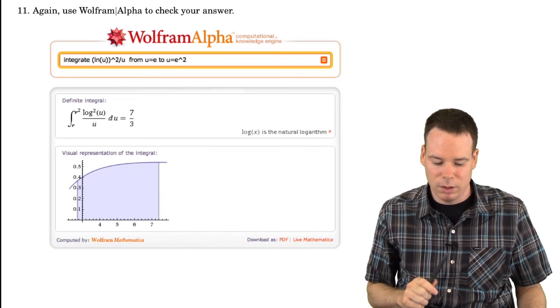And don't forget to check your answers again using Wolfram Alpha. So for that last example, here we threw it into Wolfram Alpha, and it came back with an answer of 7 thirds. So we know we're good.